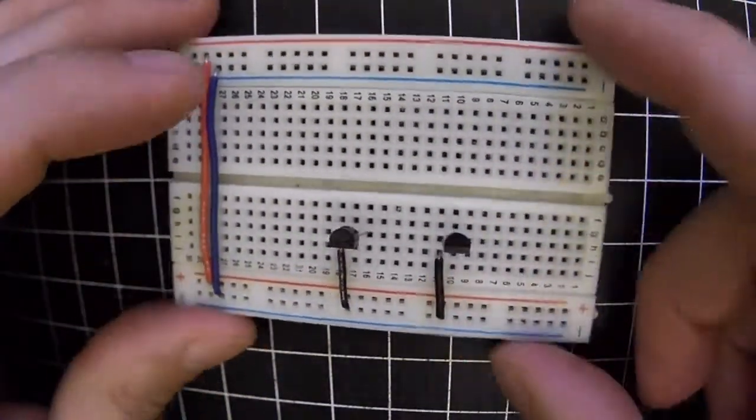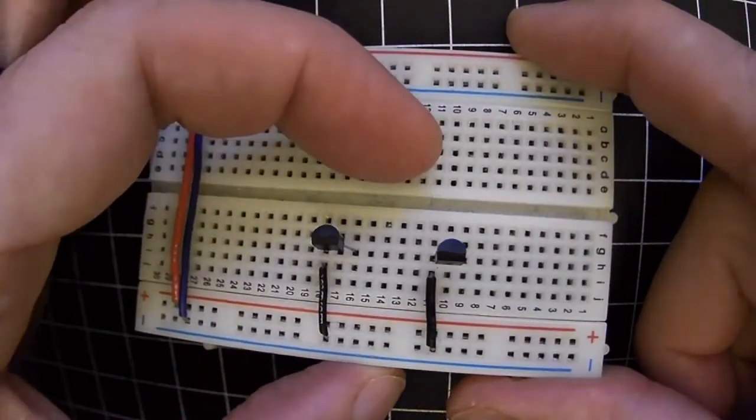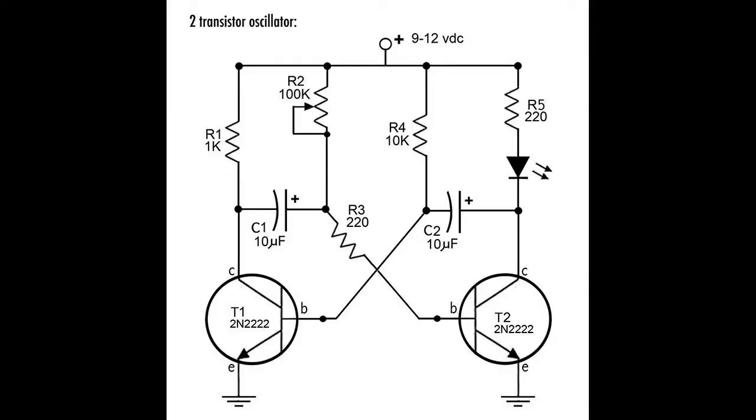Each of these transistors, when one of them discharges, it pulls the charge off the other one and allows it to restart its charging cycle. So they kind of go back and forth like a seesaw, which you can see in the schematic diagram.